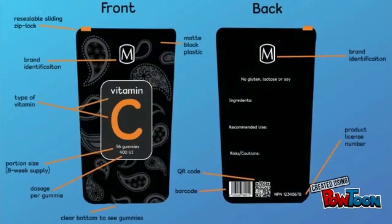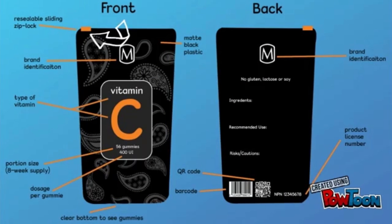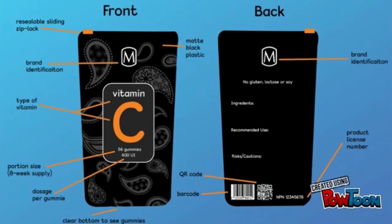Here is our package design. There is a resealable sliding ziplock tab for easy access, a clear bottom that allows you to see the gummies inside, Modstrom's logo, and a QR code that links you to an app that helps you plan and track your supplement needs. On the front label, the vitamin type is displayed along the portion and the dosage per gummy.